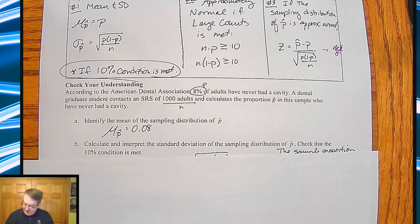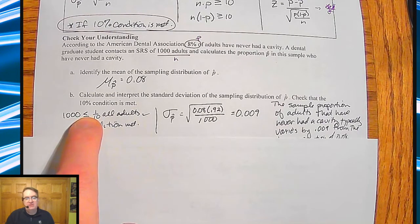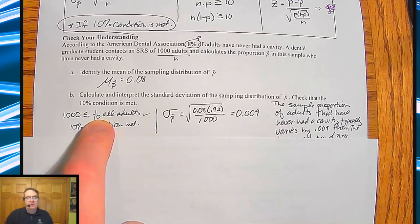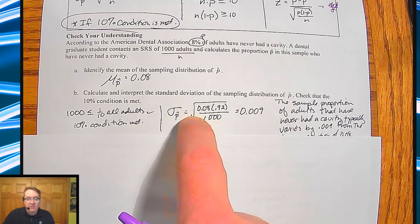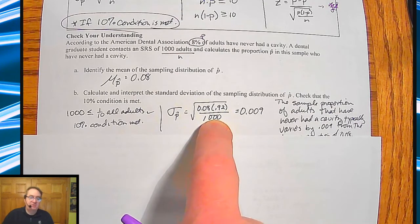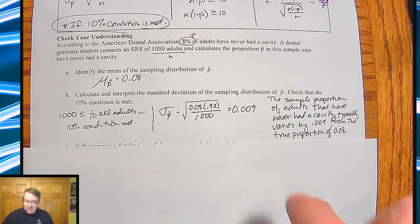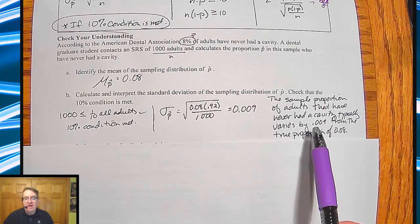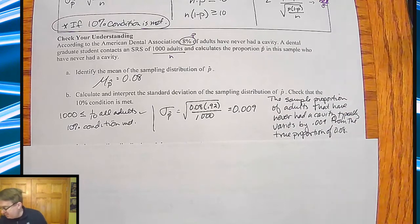And then calculate and interpret the standard deviation. Check that the 10% condition is met. So for the 10% condition, a thousand is less than or equal to 10% or one-tenth of all adults. So therefore the 10% condition is met. For your standard deviation then, you're going to take the square root of p times one minus p divided by your sample size of n. In this case, a thousand. So we get 0.009. Now you do have to state something out. So you're going to say the sample proportion of adults that have never had a cavity typically varies by 0.009 from the true proportion of 0.08.